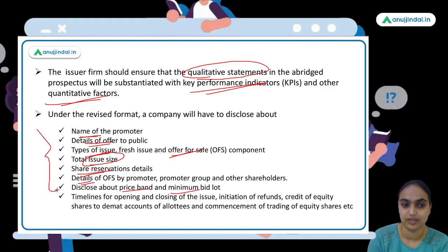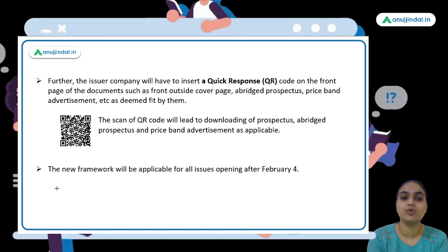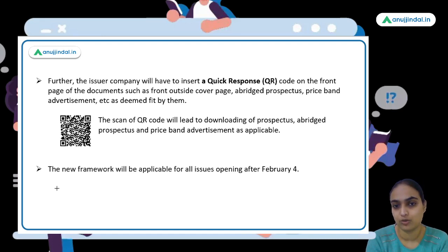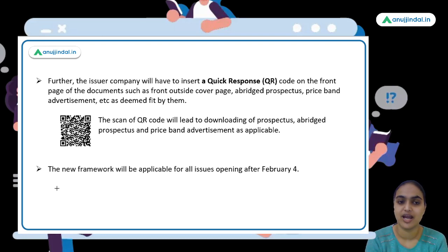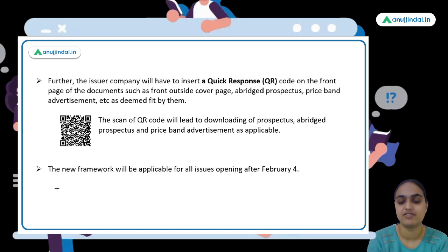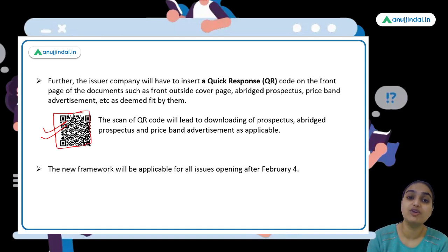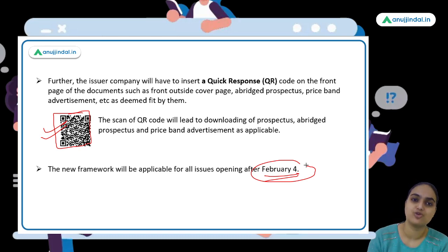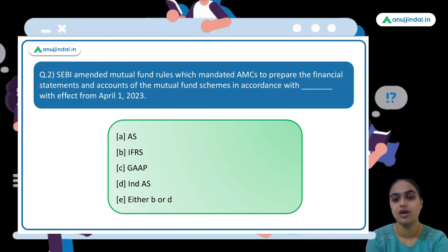A QR code must also be included in all important documents — the front cover page, the abridged prospectus, and the price band advertisement. By scanning the QR code, one can download the abridged prospectus. The new framework is applicable for all issues opening after 4th February onwards.